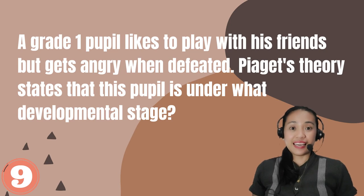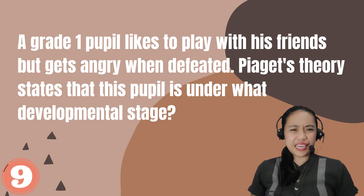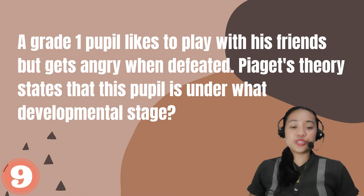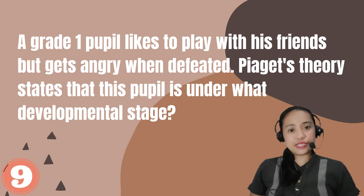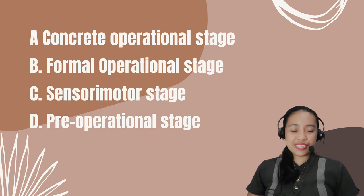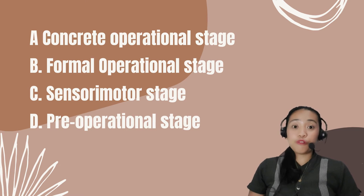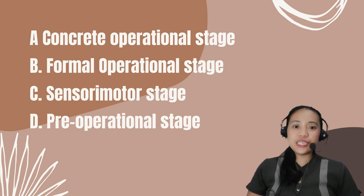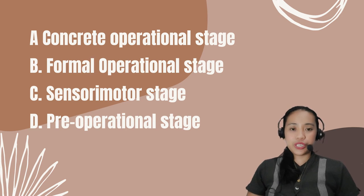Number 9. A grade 1 pupil likes to play with his friends but gets angry when defeated. Piaget's theory states that this pupil is under what developmental stage? A. Concrete Operational Stage. B. Formal Operational Stage. C. Sensory Motor Stage. D. Pre-Operational Stage.